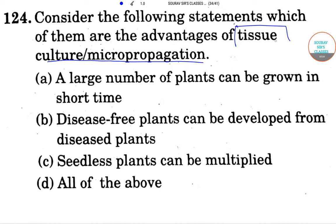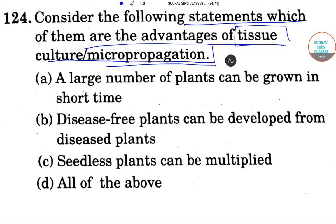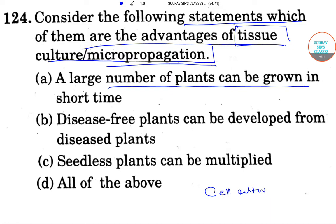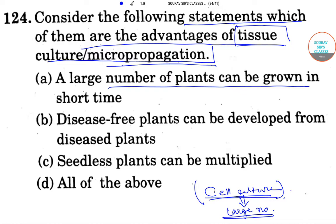Now moving to the next question about tissue culture or micro-propagation. We have to consider the following statements and identify the advantages of tissue culture and micro-propagation. Option A: a large number of plants can be grown in a short time - yes, when we do cell culture for large-scale production, this is done in very short time compared to other procedures.